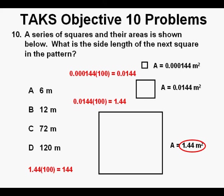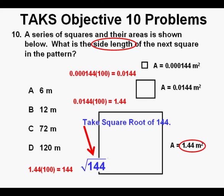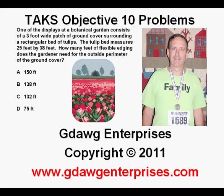In order to find the length of one side, what do we need to do? We take the square root of 144. And what is the square root of 144? It is 12, 12 meters. And this is where we find 12 meters, so we circle our correct answer, B. This has been TAKS Objective 10 Problems. Thanks for viewing.